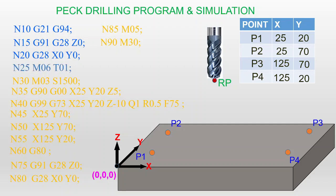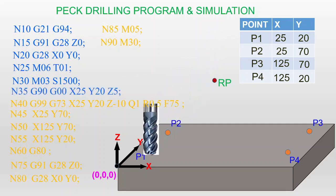Next, change the tool using M06, T01 — the drill bit is mounted on T01. Then the spindle starts rotating in the clockwise direction at 1500 RPM. Next, bring the tool from the reference point to the tool entry point using G90, G00, X25, Y20, Z5. G90 is absolute mode, G00 is rapid traverse, and Z5 positions the tool 5mm above the workpiece surface.